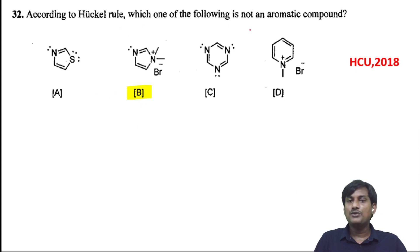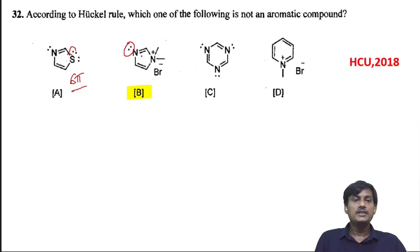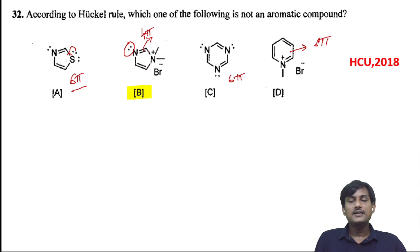According to Hückel's rule, which of the following is not an aromatic compound? For the first structure, there is delocalization of sigma electrons giving 6 pi electrons. For the second, there is no conjugation between the pi electrons and the adjacent double bond, so it has only 4 pi electrons. Since the molecule must be planar and have 4n+2 pi electrons, and this ring contains only 4 pi electrons, B is not aromatic.